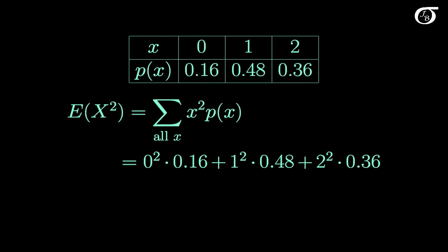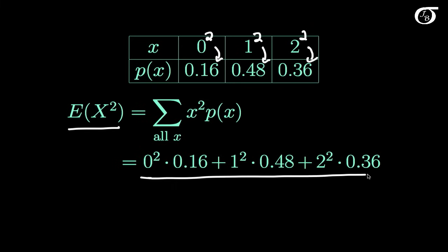Suppose we want the expectation of X squared. We do a very similar thing — we want the sum of x² times p(x). We go to our probability distribution, take each value of x, square it, and multiply by its probability of occurring: 1 squared times 0.048, 2 squared times 0.036, and so on for all values. We end up with E[X²] equal to 1.92.